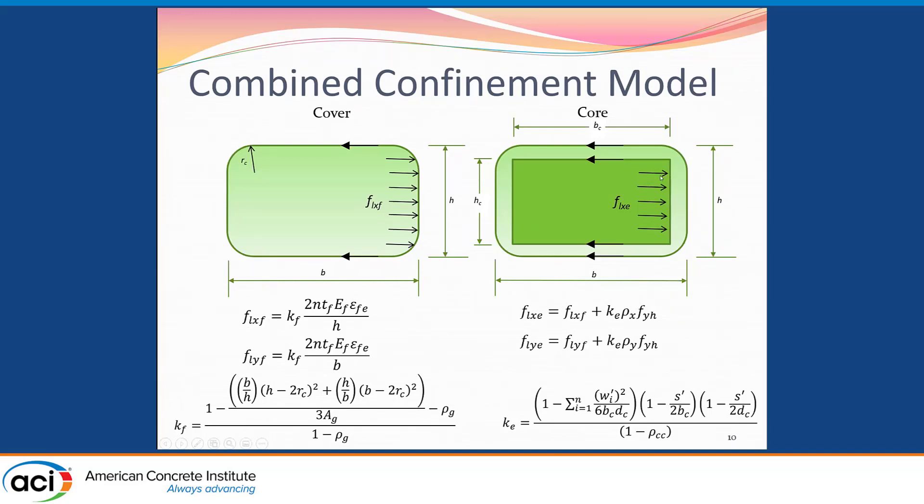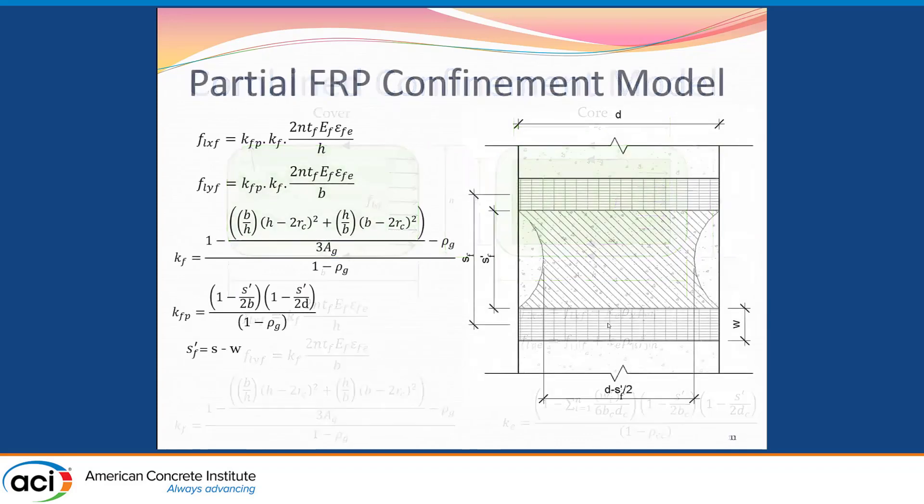Moving on to the core, the concrete column core is actually under the confinement effect of both the internal steel and the external FRP. We can see here the effective pressures in X and Y are basically the pressure we had from the FRP here, FLXF and FLYF, and also the effective pressure coming from the steel. The effective area, again, is similar to what was before. It accounts for the geometry and also the spacing of the longitudinal bars.